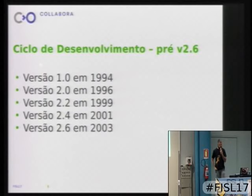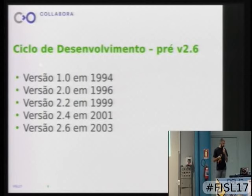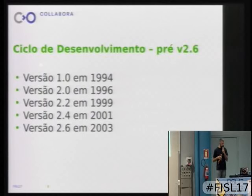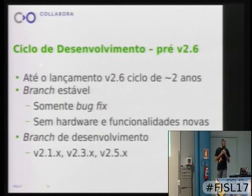How does the development cycle work? The kernel was launched in 1991, but the first stable version came out in 1994. After that came 2.0 in 1996, 2.2 in 1999, 2.4 in 2001, and 2.6 in 2003. At that time the cycle was about two years.